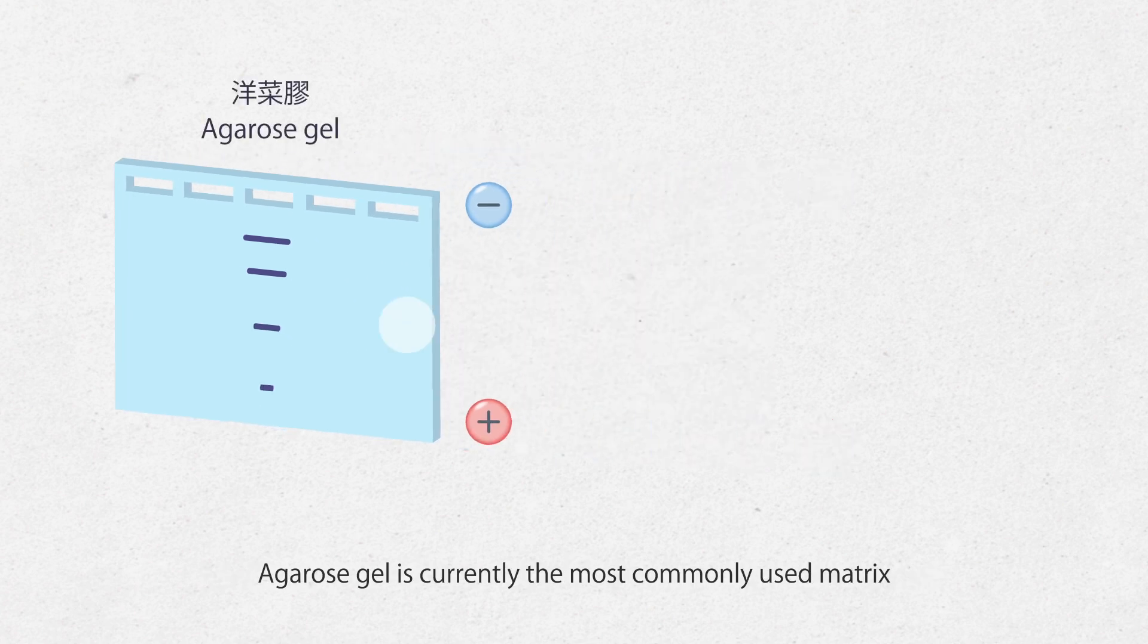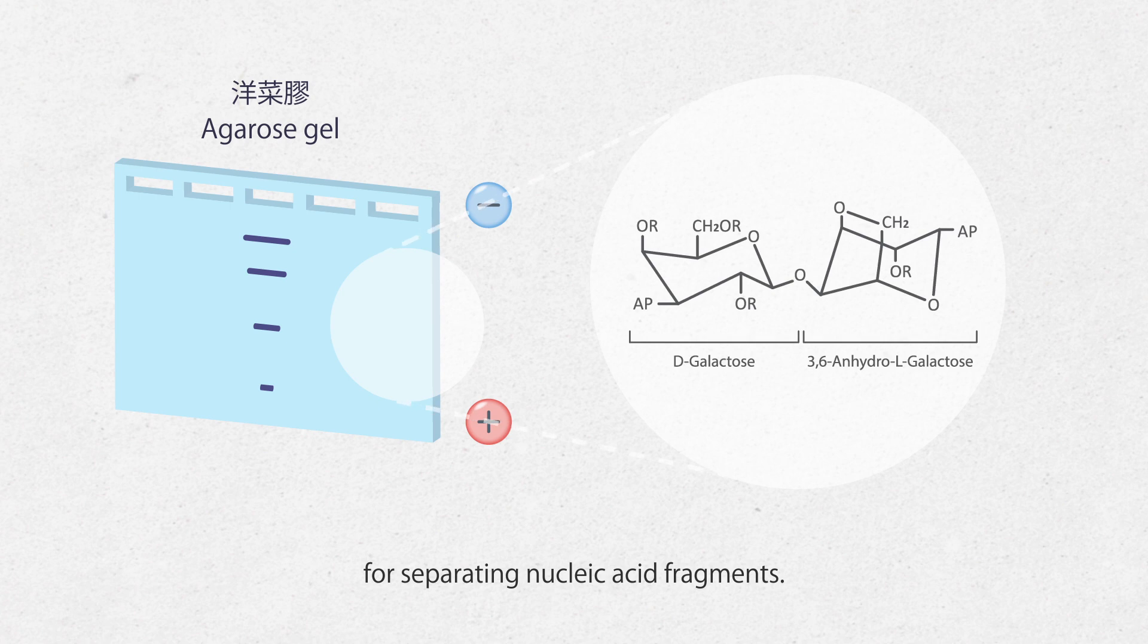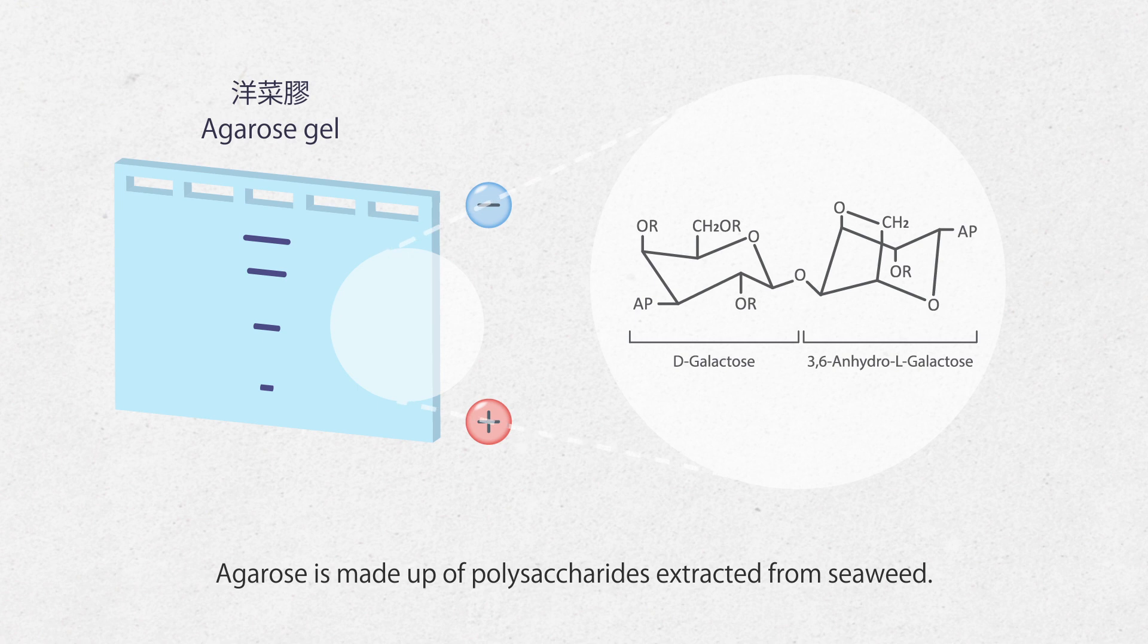Agarose gel is currently the most commonly used matrix for separating nucleic acid fragments. Agarose is made of polysaccharides extracted from seaweed. The repeating unit of the polymer is a disaccharide of different forms of galactose molecules.